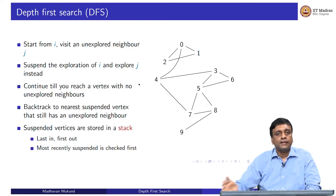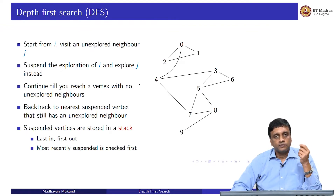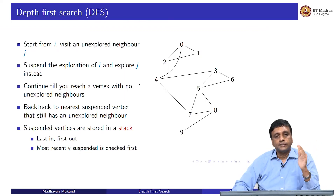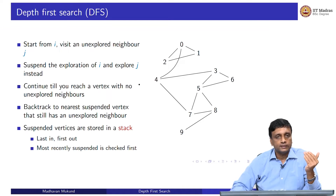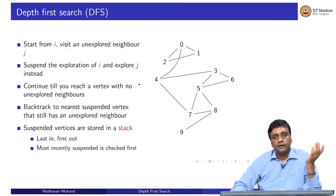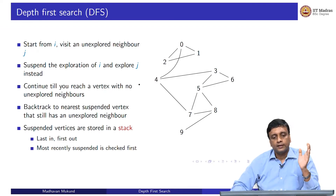To do systematic backtracking, we use a different data structure from what we used for breadth first search. In BFS, we put vertices in a queue, so every time we saw a new unvisited vertex we put it in the queue and they came up for exploration in order — earlier vertices got processed before later ones. In depth first search, when we backtrack we want to go back to the most recent vertex from which we made a choice. That is why we use a stack.